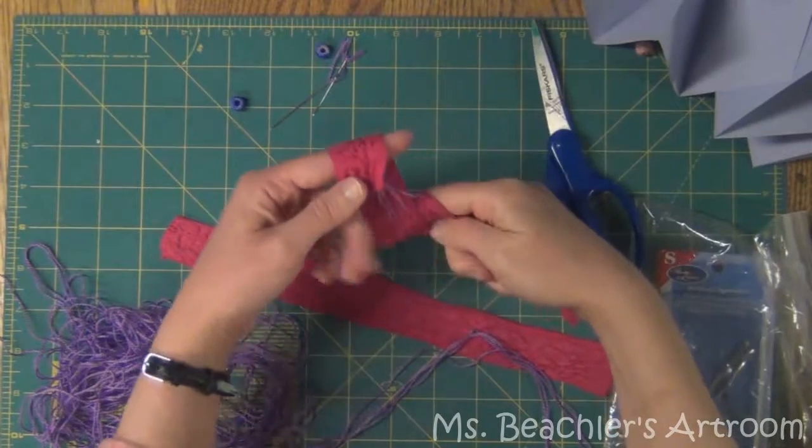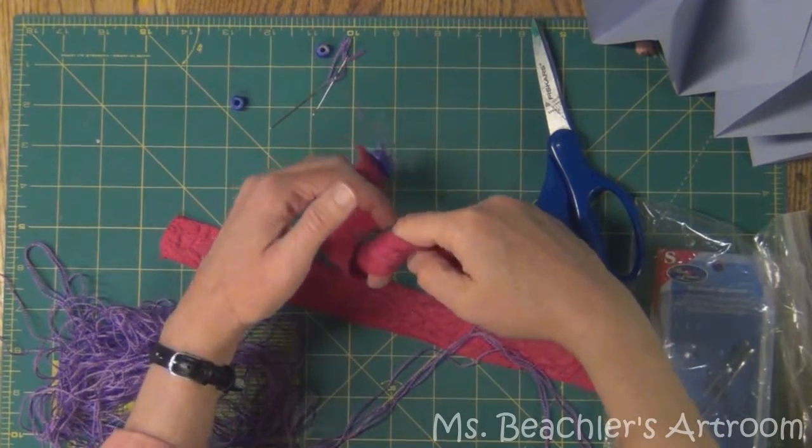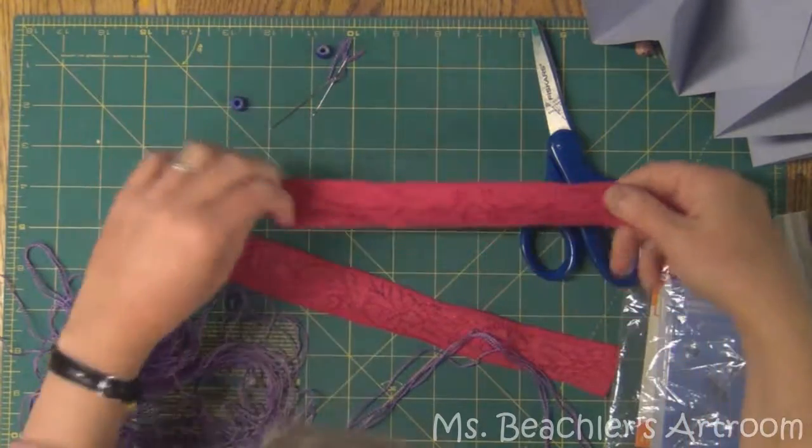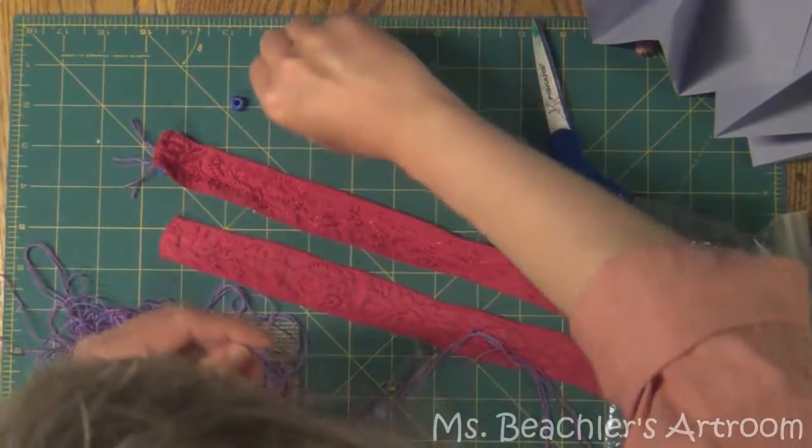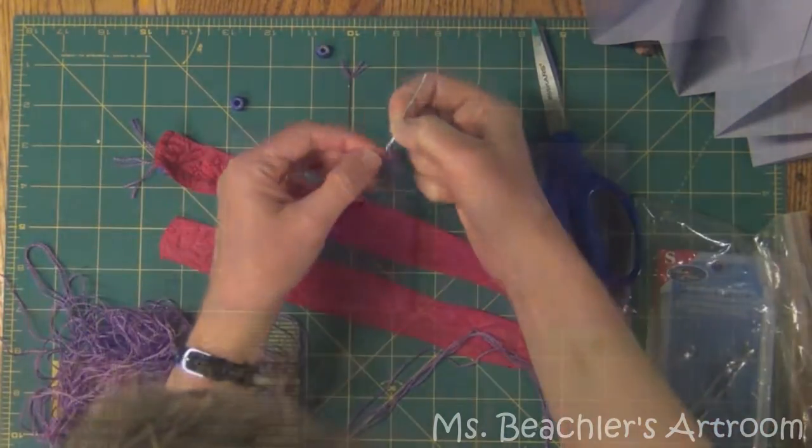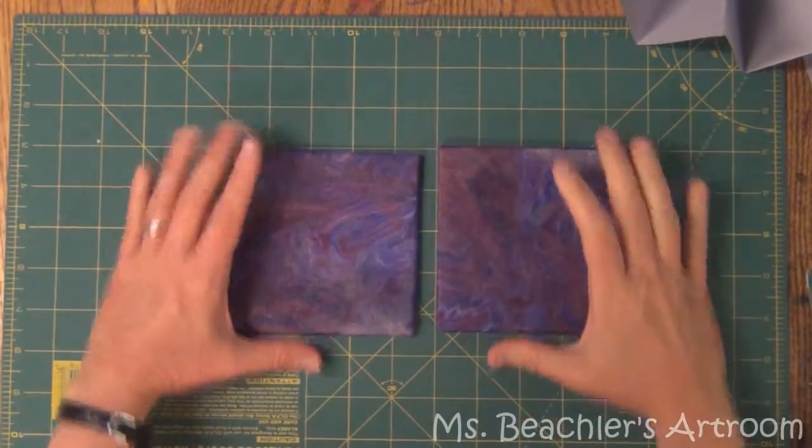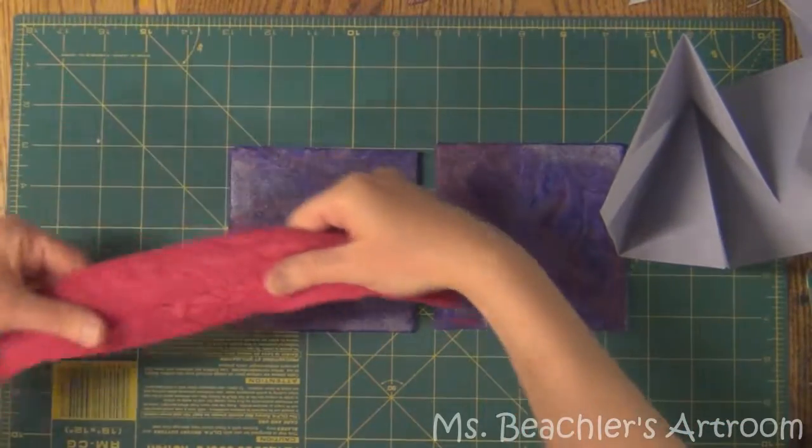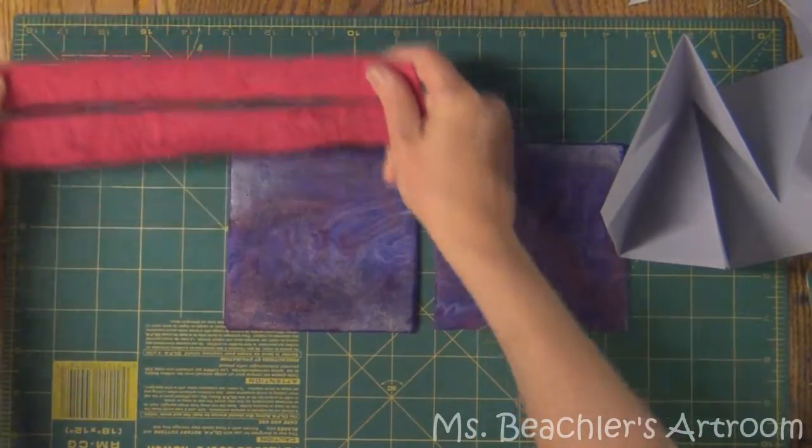I'm just going to go ahead and cut this so you have a little bit of a tassel. And then we can do the same to the other one. And that will just make these a little bit more, you know, they'll just kind of catch under the other ribbon a little bit more easily.